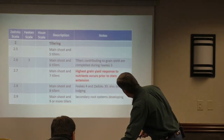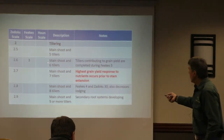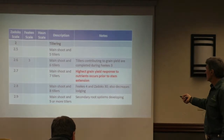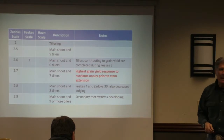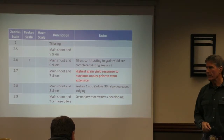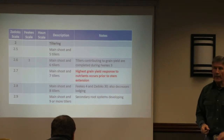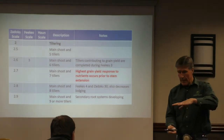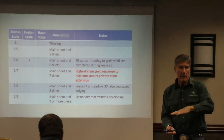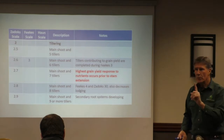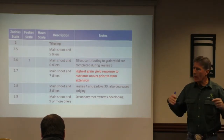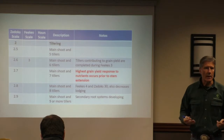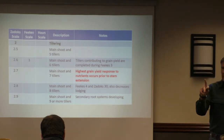Right here, by the time we get into six or seven tillers, the highest grain response to nutrition occurs prior to stem elongation. This little plant is still very small at that stage, but the nutrition it has — the plant is already sensing and determining what it's going to keep.